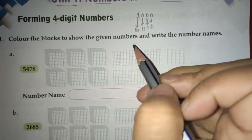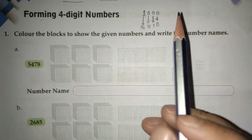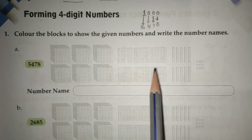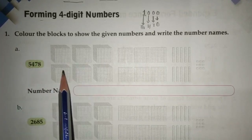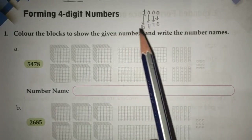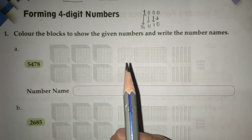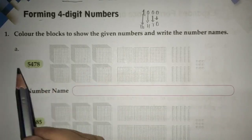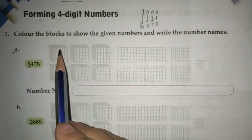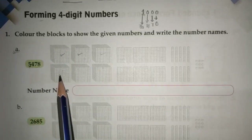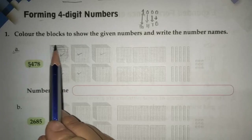The first question of the book says: color the blocks to show the given numbers and write the number names. You can see the blocks given in your book. The number given is five thousand four hundred and seventy-eight, so you have to count and color the blocks. I am using a pencil here — you can use colored pencils, but don't use crayons so it looks neat and clean.